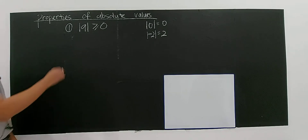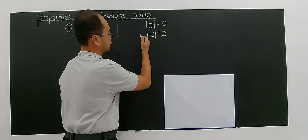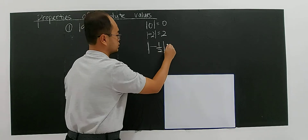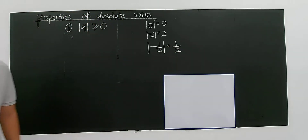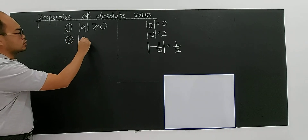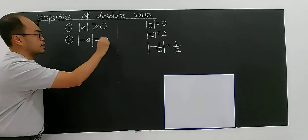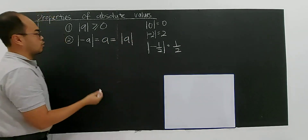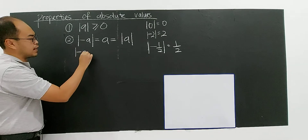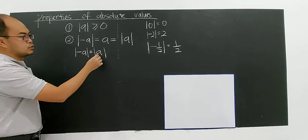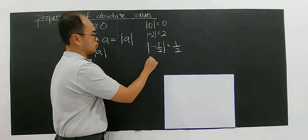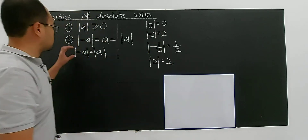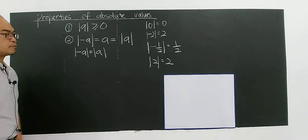The second property: the modulus of negative a is the same as the modulus of a. For example, the modulus of negative two gives you two, and the modulus of negative one-half gives you positive one-half. So modulus of negative a equals modulus of a — both give you the same positive value.